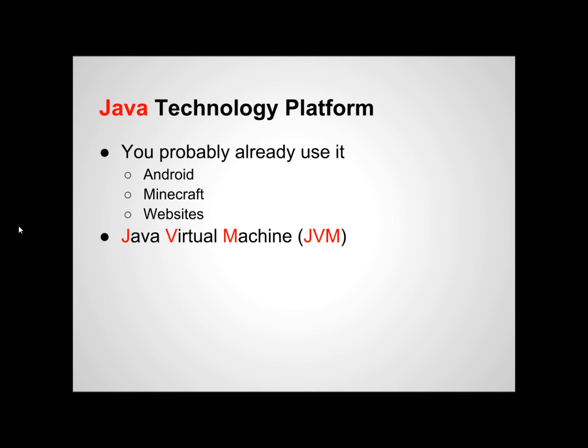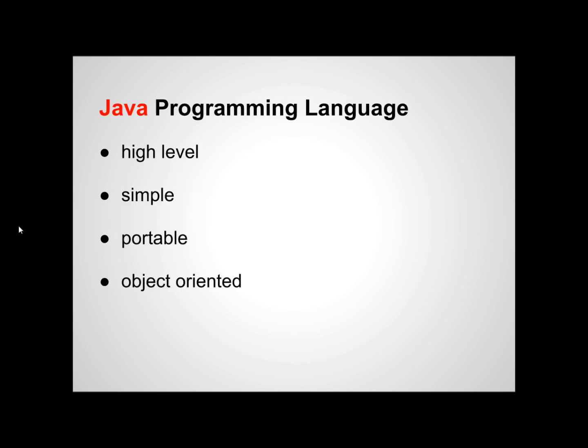Let's do a quick overview of the Java programming language. Some words used to describe Java is that it's a high-level programming language, simple, portable, and object-oriented. There are various other attributes that can be used to describe Java, but we'll keep it simple and focus on these for now. Let's go over each point in more detail.